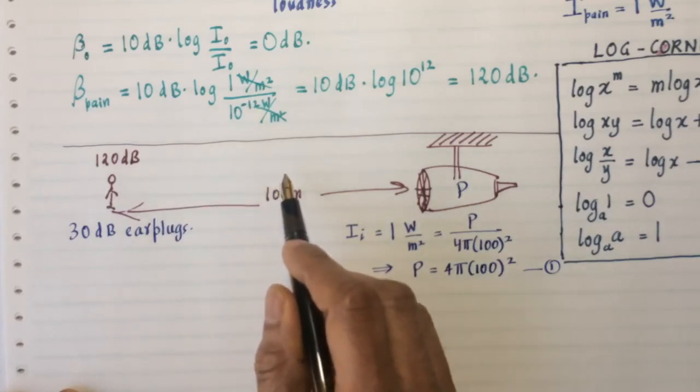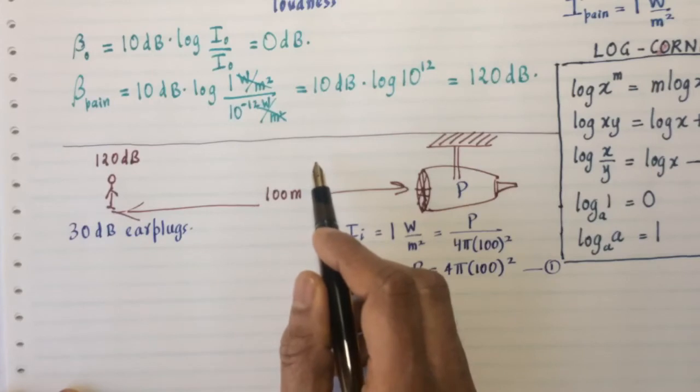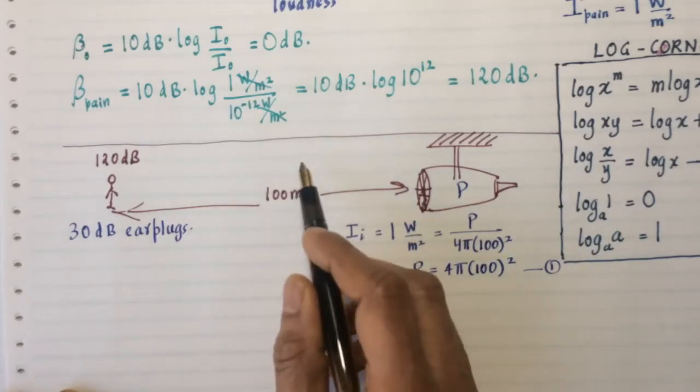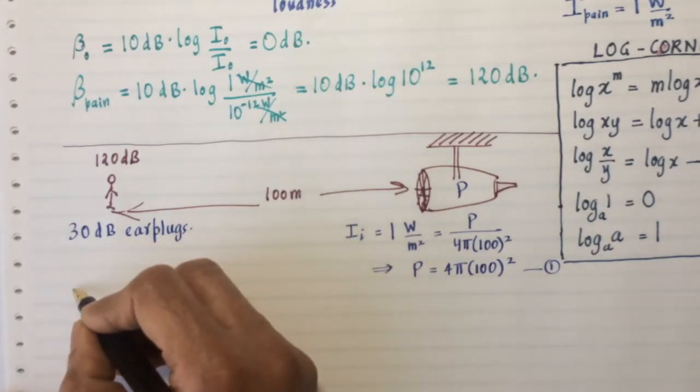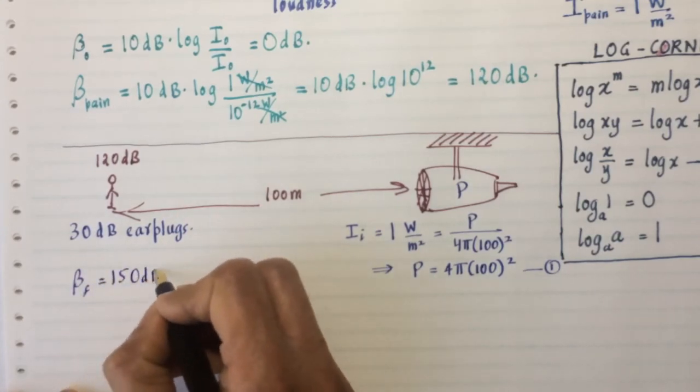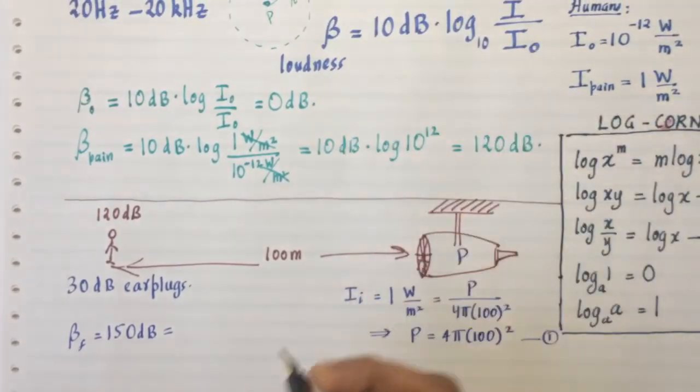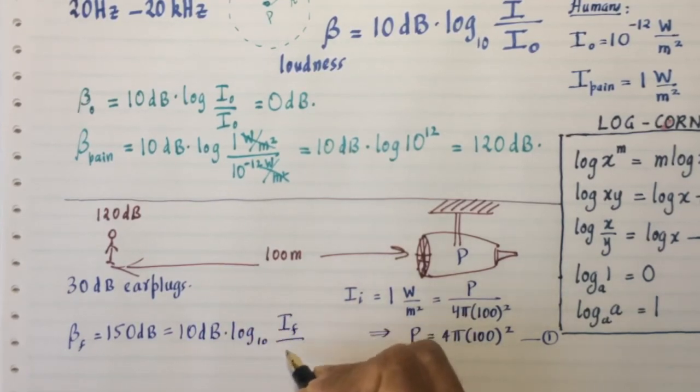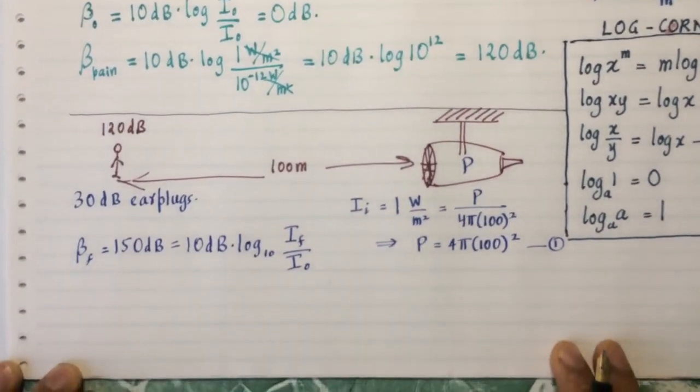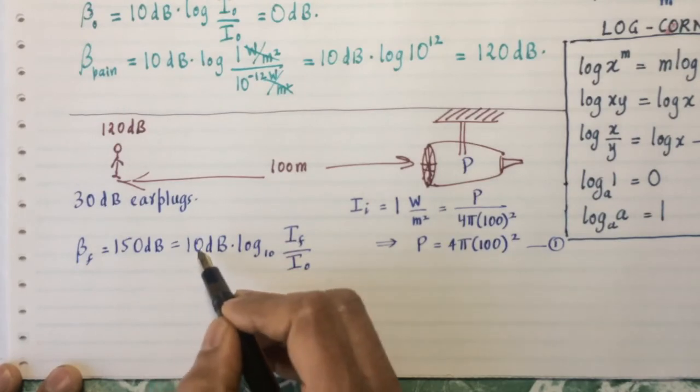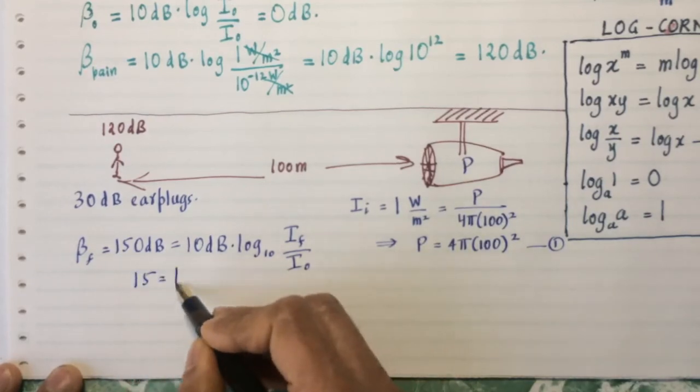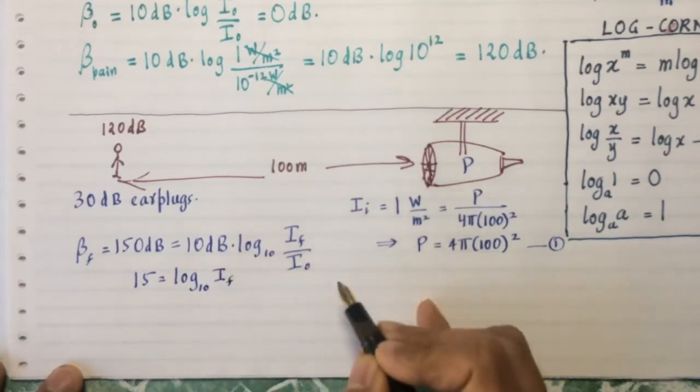Now when you wear the 30 dB earplugs, at this location now you'll only hear 90 dB. So you can keep going closer and closer till you get the pain again, till you hear 120 again. Now if you open your earplugs at that point, you're actually going to be at a location where the intensity is, where the loudness is 120 plus 30, because the 30 was being taken off. So you'll actually be at a place where it's 150. So the new β final is going to be 150 dB. And by the formula for the loudness, that's equal to 10 dB times log to base 10 of the final intensity over the threshold of hearing for human beings. Let's work with this. 10 and 150 cancel to give me 15. So I get 15 equals log to base 10 of I_F divided by I₀.